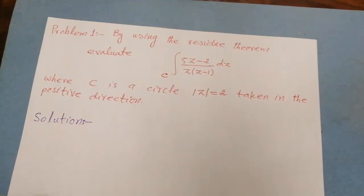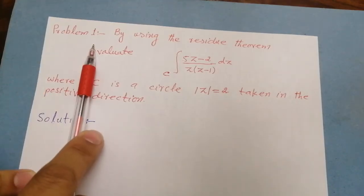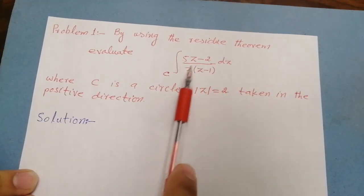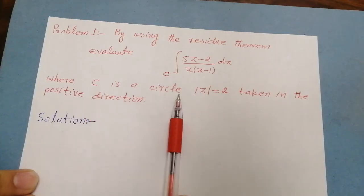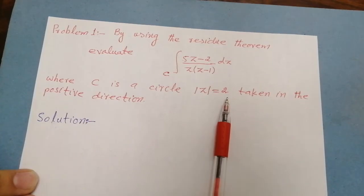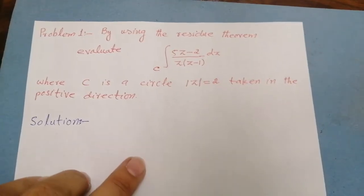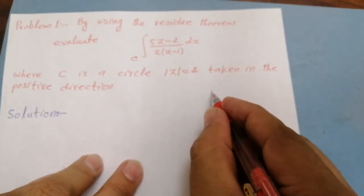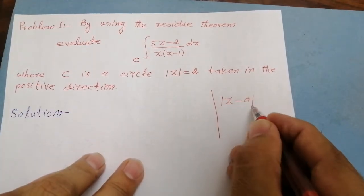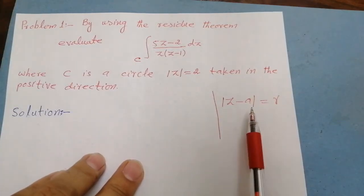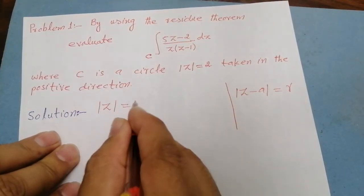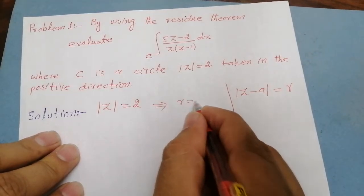Now let us solve a problem to see the application of this theorem. Problem number 1: by using the residue theorem, evaluate the integration of (5z minus 2) divided by z(z minus 1), where c is a circle with absolute value of z equal to 2, taken in the positive direction. First of all we have to draw this circle. Recalling the general equation of a circle, |z - a| = r, where r is the radius and a is the center — here |z| = 2 means the radius is 2.